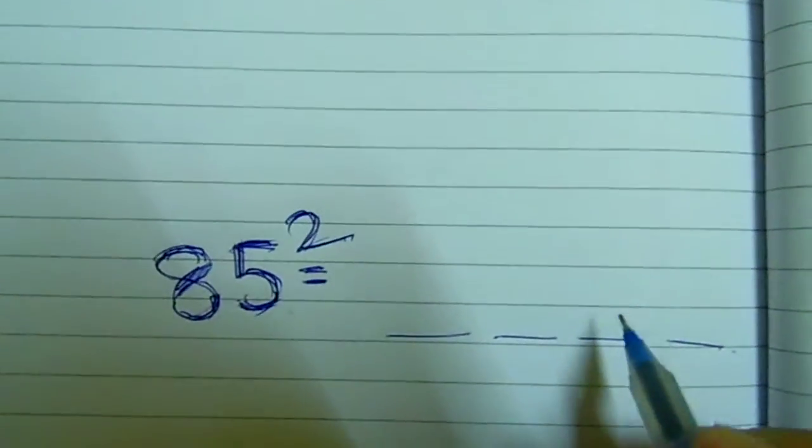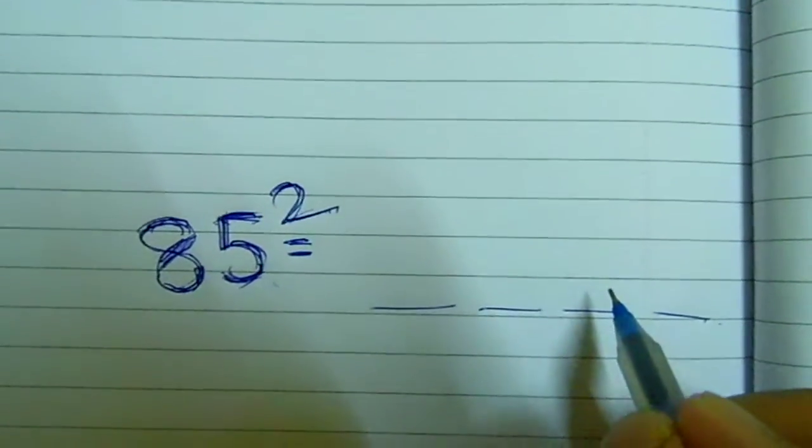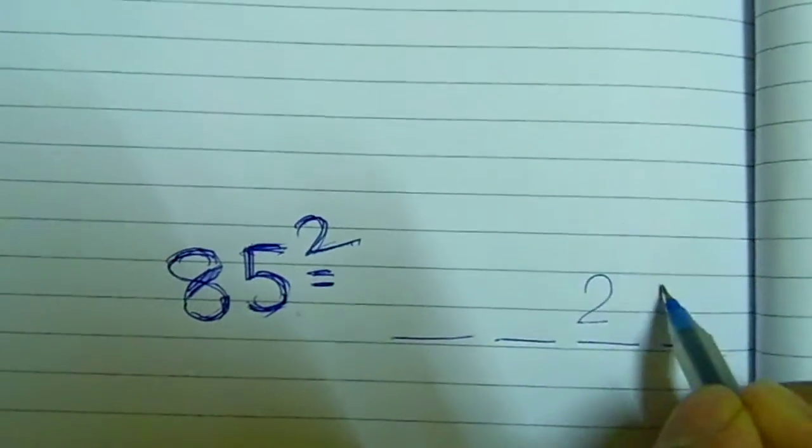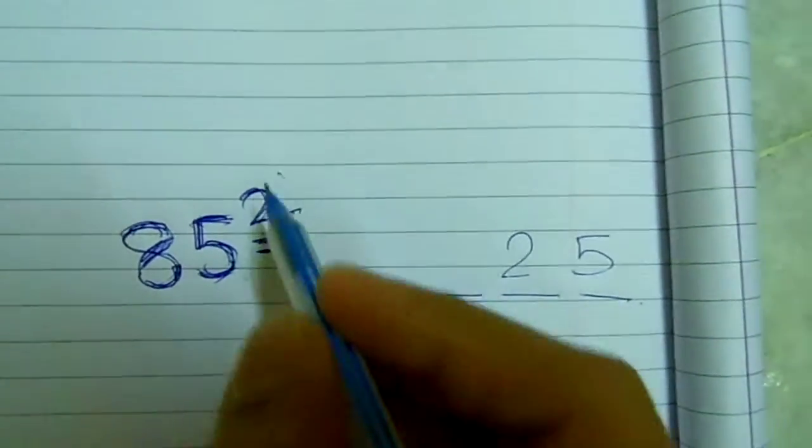To get the value of the product, the last two digits will simply be 25. 5 square is 25.